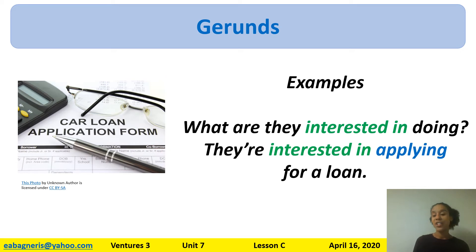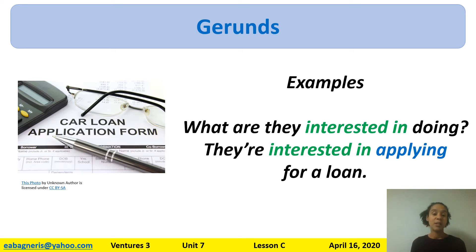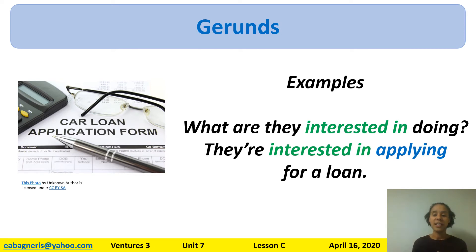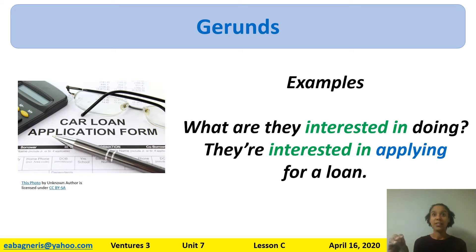What are they interested in doing? They're interested in applying for a loan. 'Interested in' is a phrase — they always go together. What are they interested in means: what are they thinking about, what do they want? They're interested in applying for a loan. My prepositional phrase is in green and I follow it with a gerund in blue.